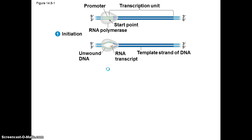The first step, initiation, is where RNA polymerase will bind to an area called a promoter. The RNA polymerase binds there and then starts transcribing. The RNA polymerase also unwinds the DNA and begins adding RNA nucleotides in the 5' to 3' direction.